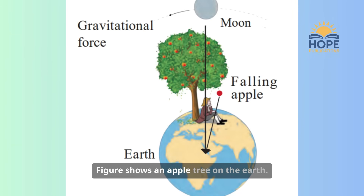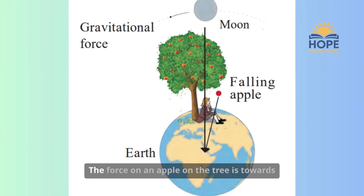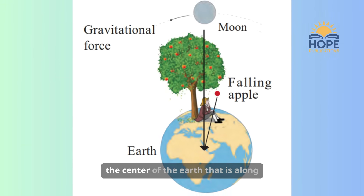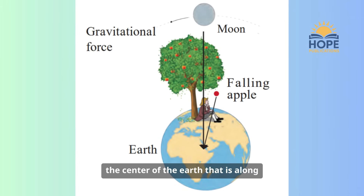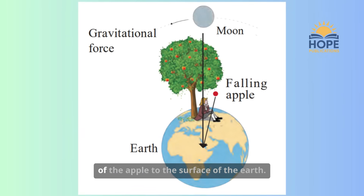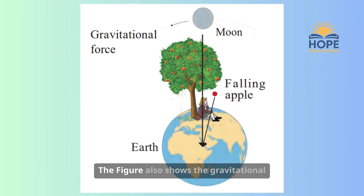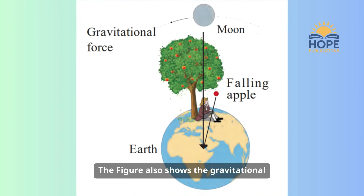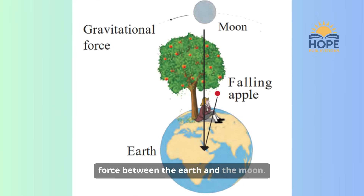The figure shows an apple tree on the earth. The force on an apple on the tree is towards the center of the earth, that is, along the perpendicular from the position of the apple to the surface of the earth. The figure also shows the gravitational force between the earth and the moon.